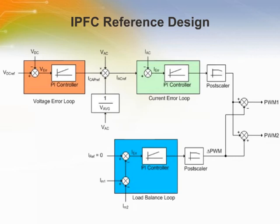To balance the currents through both inductors, a load balance loop is implemented. The inputs to this compensator are the two currents, IM1 and IM2. If these currents are different, an imbalance is detected, and a PI controller regulates this error and adjusts the MOSFETs' duty cycle. The output of the load balance control loop is a duty cycle correction term, which is subtracted from PWM1 to get the final duty cycle of the first boost converter, and added to PWM2 to determine the balanced duty cycle of the second boost converter.